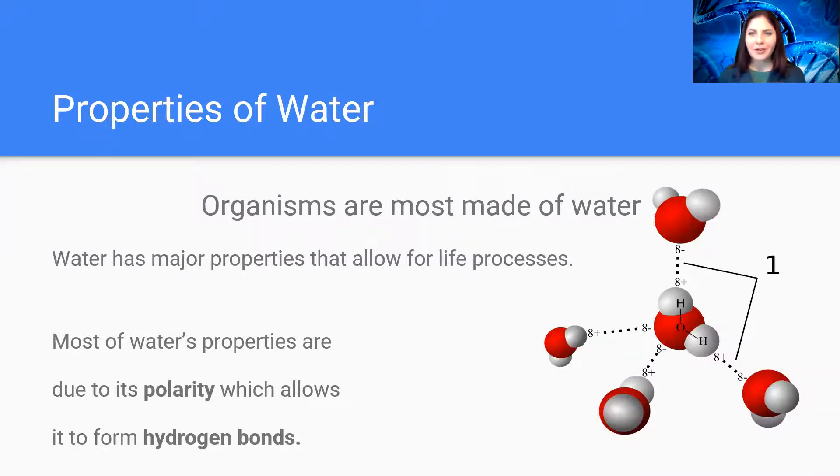So first of all, water is super important because most organisms on earth are composed primarily of water. Water has major properties that allow for all of the life processes within us to take place.